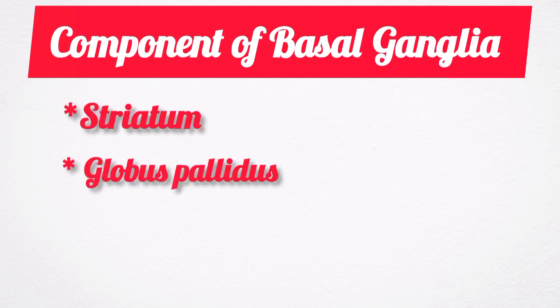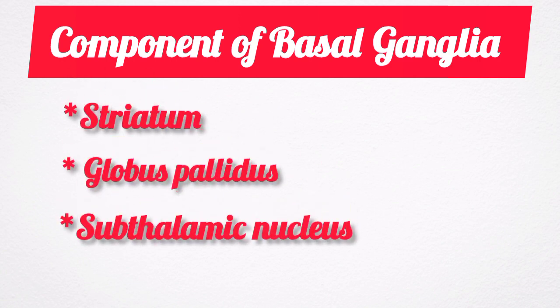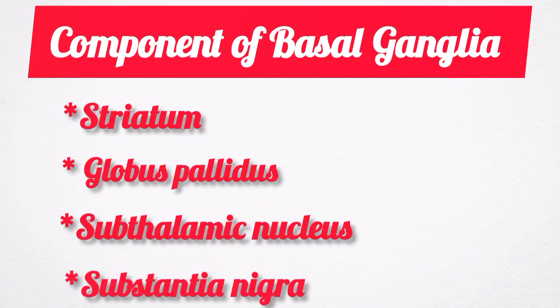The four major components of basal ganglia are the striatum, the globus pallidus, the subthalamic nucleus, and the substantia nigra.